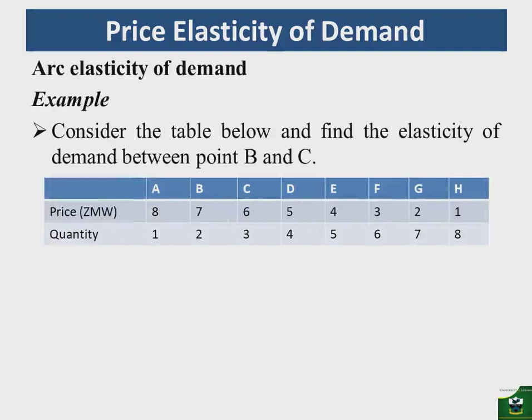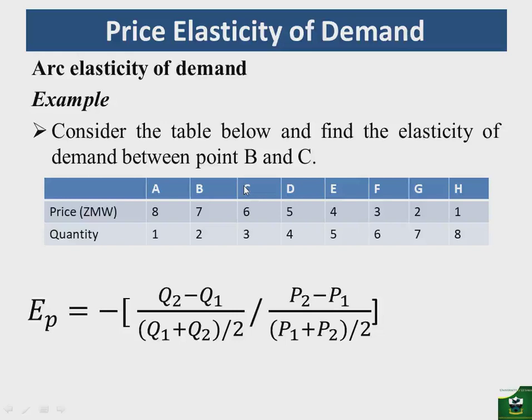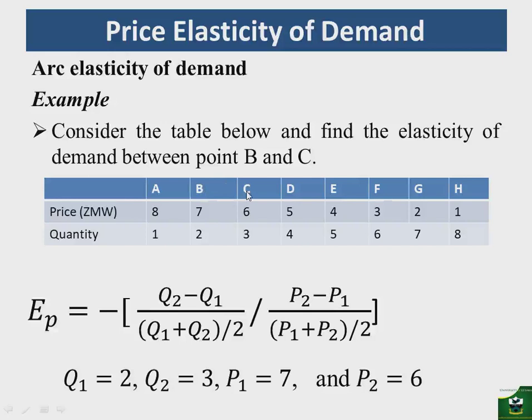Let's take an example. Consider a table and find the elasticity of demand between point B and point C. Recall the formula: elasticity equals (Q2 − Q1) divided by the average of the quantities, over (P2 − P1) divided by the average of the prices. Moving from B to C, Q1 is 2, Q2 is 3, P1 is 7, and P2 is 6.